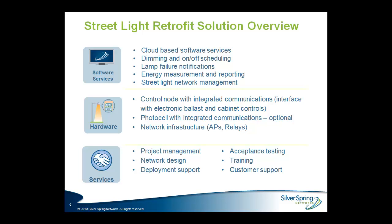The software services are essentially the same: dimming and on/off control, energy measurement, lamp failure identification and notifications, and network management. The hardware is slightly different. There is a control node with integrated communications — an interface card with our communications module enabling access to electronic ballasts and cabinet controls. There are also photocells with communications modules, allowing replacement of an existing photocell on a traditional lamp using the same receptacle. Access points and relays create the network fabric, and services remain pivotal for successful deployment, network design, and ongoing support.